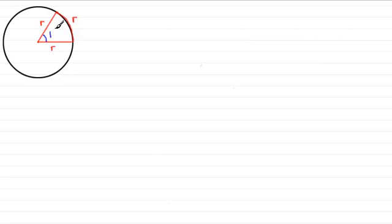And we write a little c for radians. So c is used to denote radians, if you don't want to write the word radians. So one radian is defined as the angle subtended at the centre of a circle of radius r by an arc of length r.